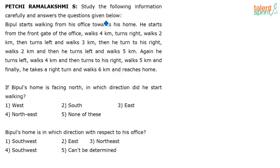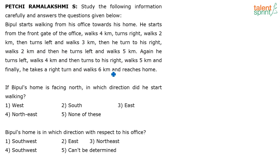Study the following information carefully and answer the questions given below. Bipul starts walking from his office towards his home. He starts from the front gate of the office, walks 4 kilometers, turns right, walks 2 kilometers, then turns left, walks 3 kilometers, then turns right, walks 2 kilometers, then turns left and walks 5 kilometers. Again he turns left, walks 4 kilometers, turns right, walks 5 kilometers, and finally takes a right turn and walks 6 kilometers to reach home.